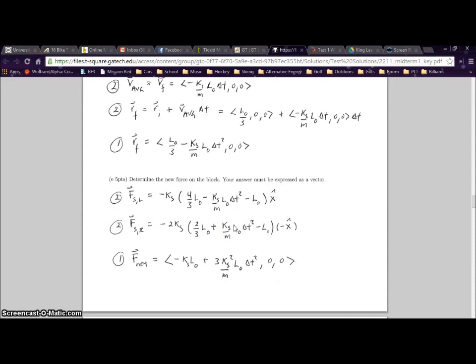The reason we did this is like before - this is the change in the position, so we need to factor that into our equation. The reason we have plus KS over M L0 delta T squared instead of negative like in the left spring is because it's acting in the opposite direction.